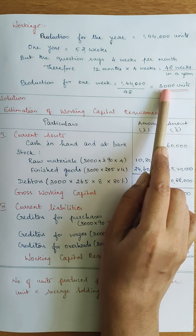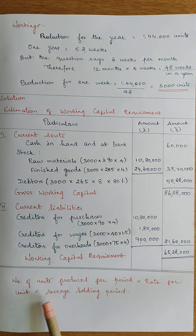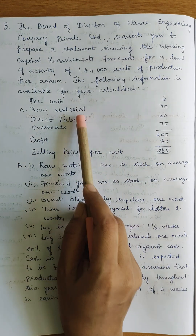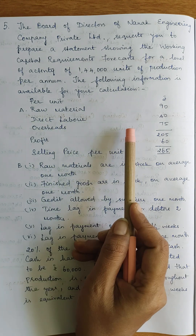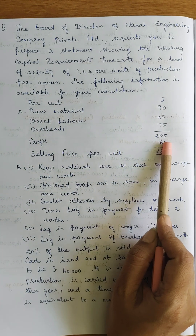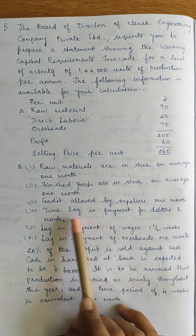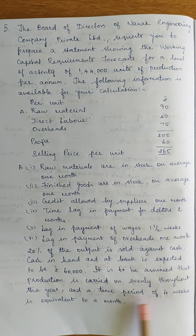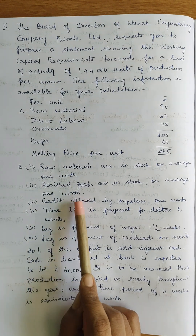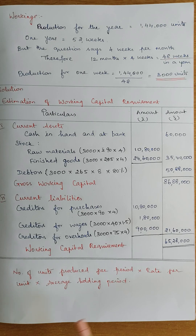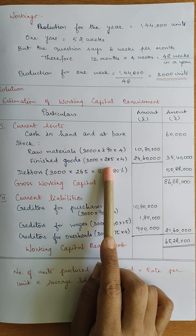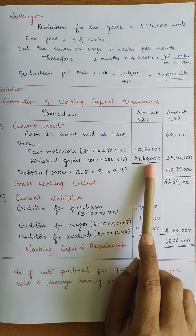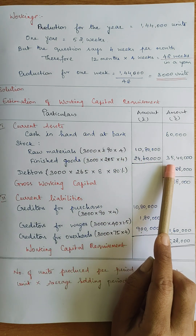Finished goods: number of units per period = 3,000. Into total cost rate per unit = 205 rupees. Into average holding period = 1 month = 4 weeks. So finished goods = 3,000 into 205 into 4 = 24,60,000 rupees. Adding raw materials and finished goods, total stock = 35,40,000 rupees.